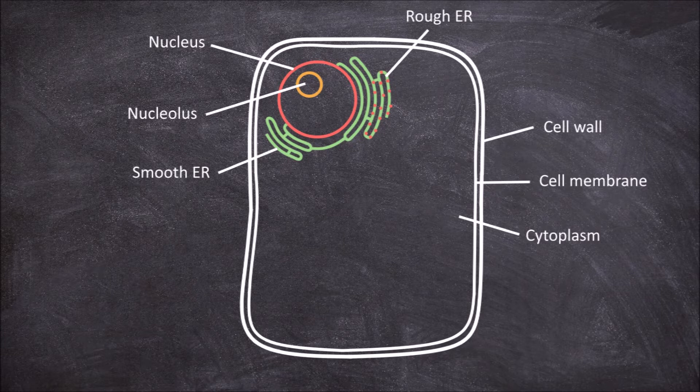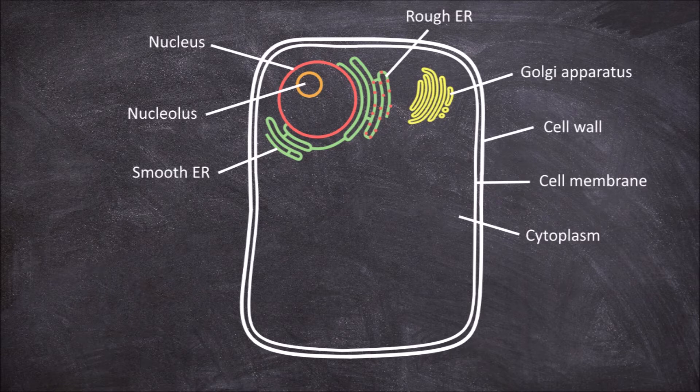The next organelle is the Golgi apparatus, which consists of folded membranes and vesicles. The function of the Golgi apparatus is in preparing proteins for secretion, movement of lipid molecules around the cell, and they are also involved in making the lysosomes also found in the cells.